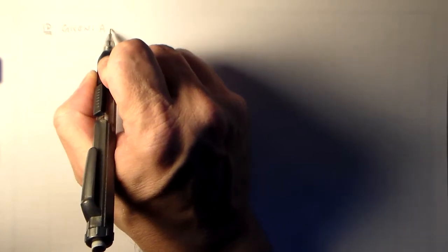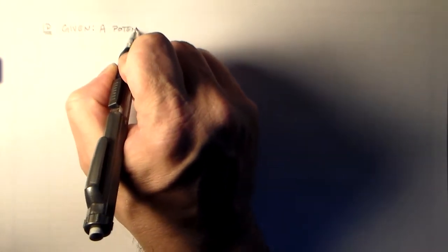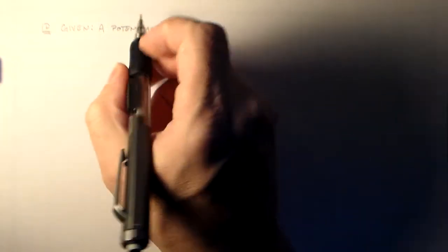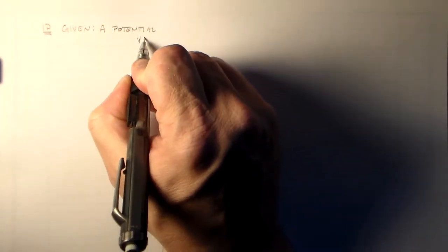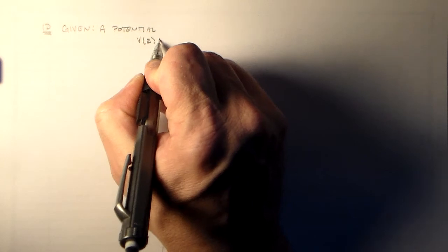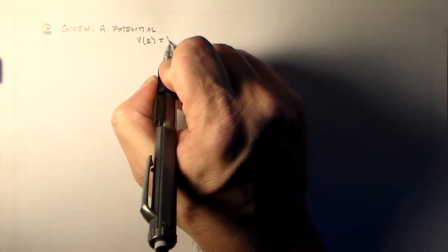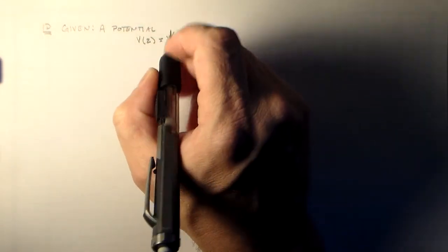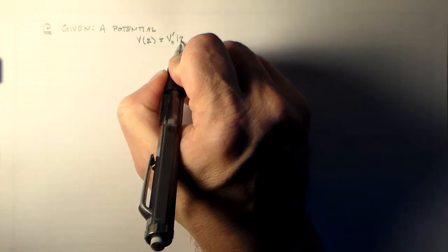So, I just want to say to have a potential. Alright, of the form V of z is equal to V naught prime times the absolute value of z.